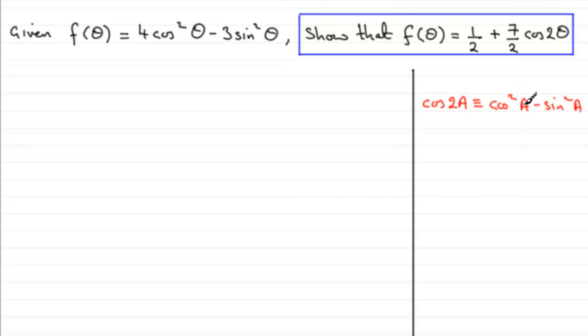If you replace cos squared a with 1 minus sine squared a, remember the identity sine squared a plus cos squared a is 1. So cos squared a is 1 minus sine squared a. Then you end up with 1 minus sine squared a minus another sine squared a. 1 minus 2 sine squared a in other words.